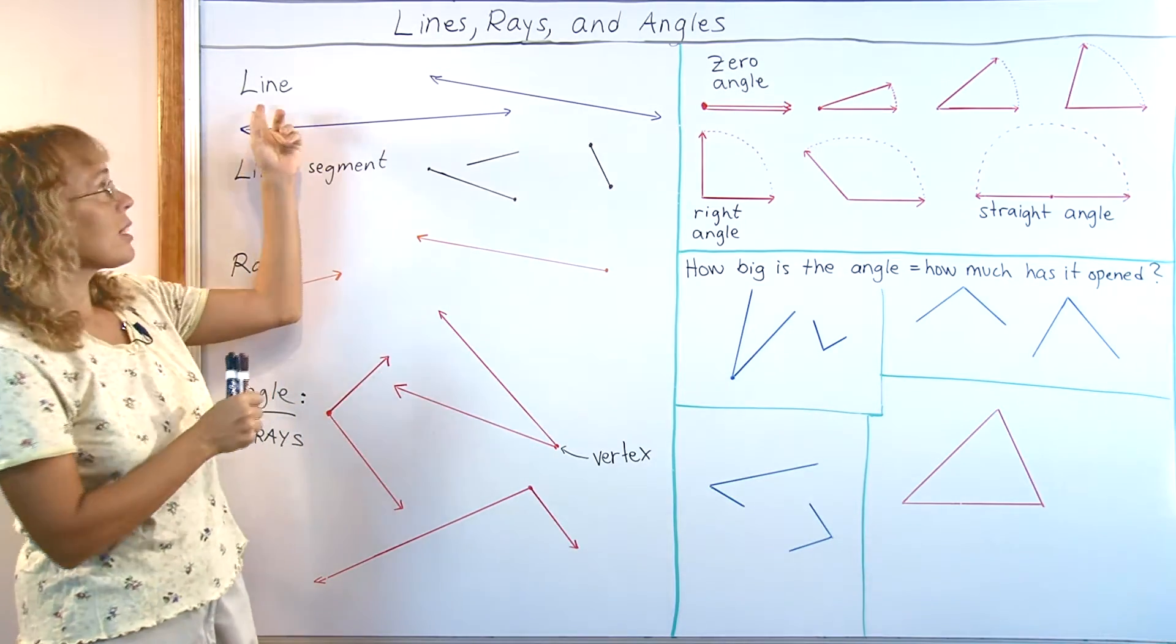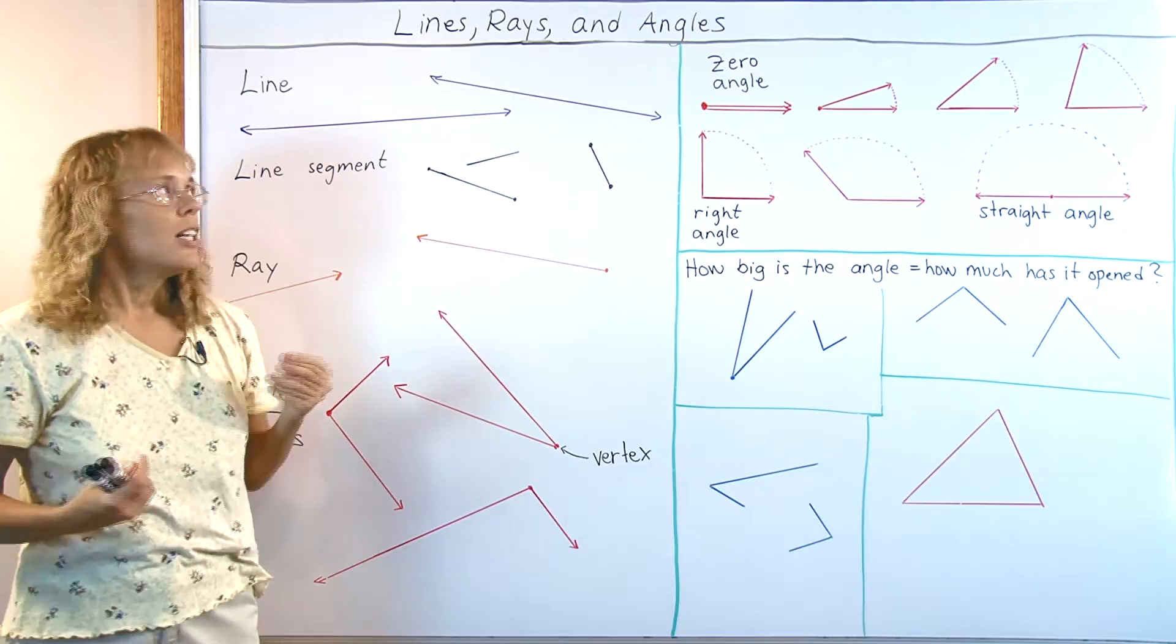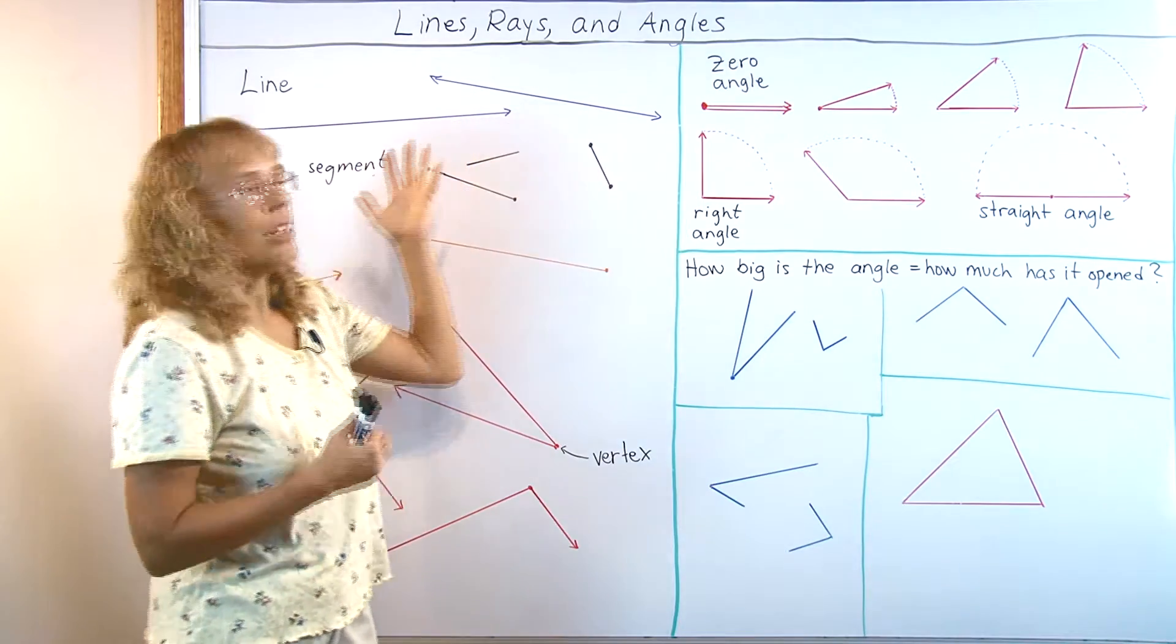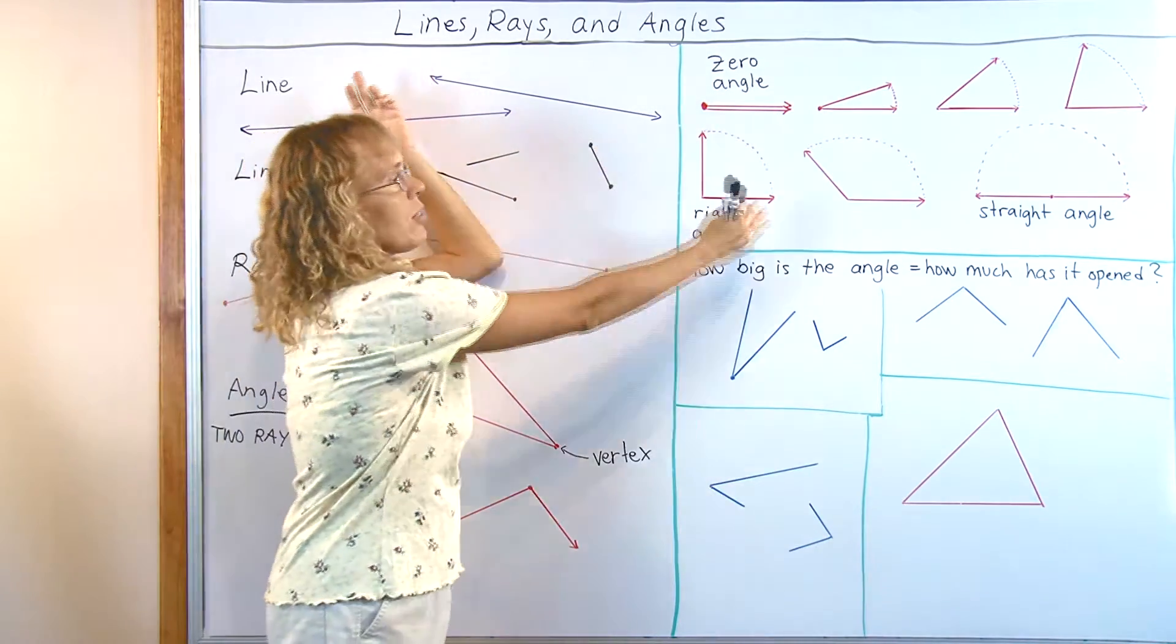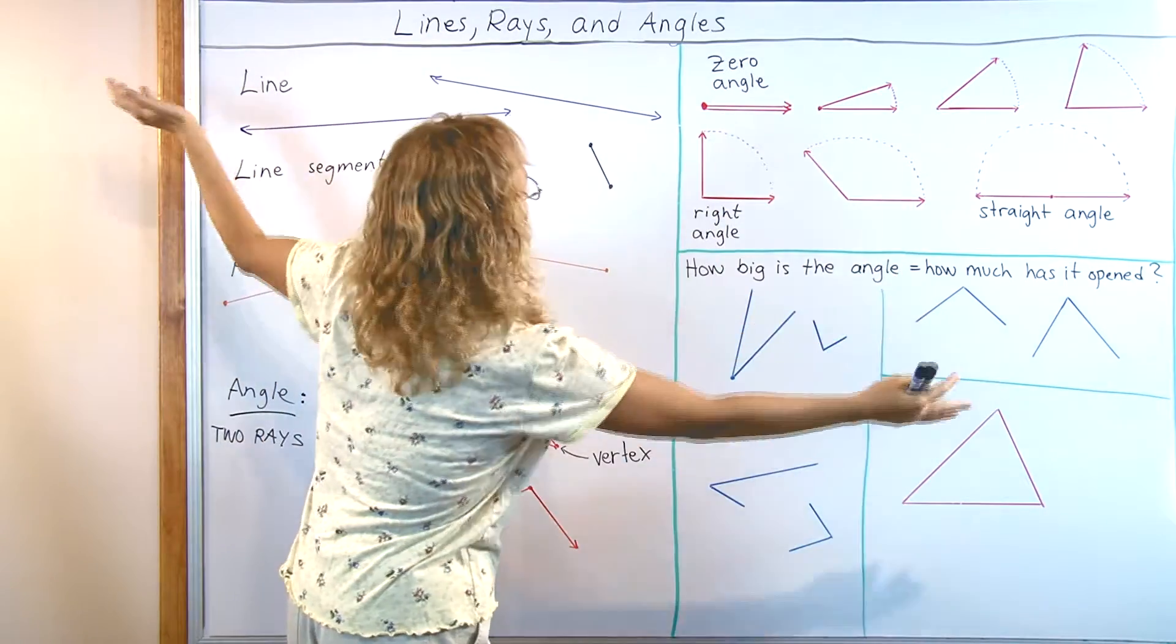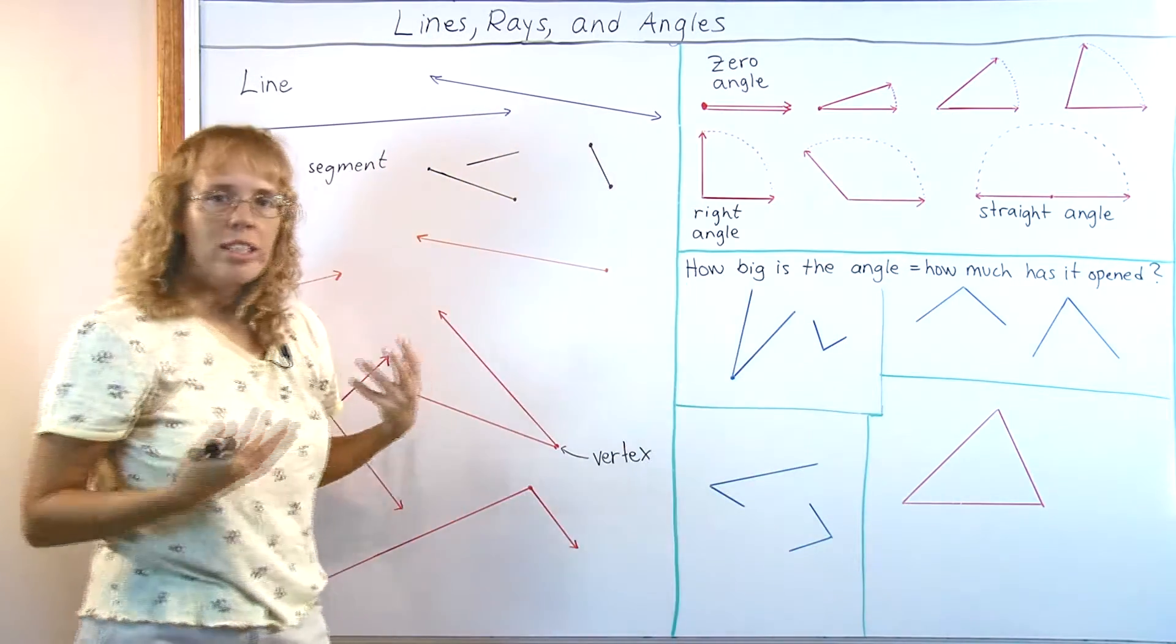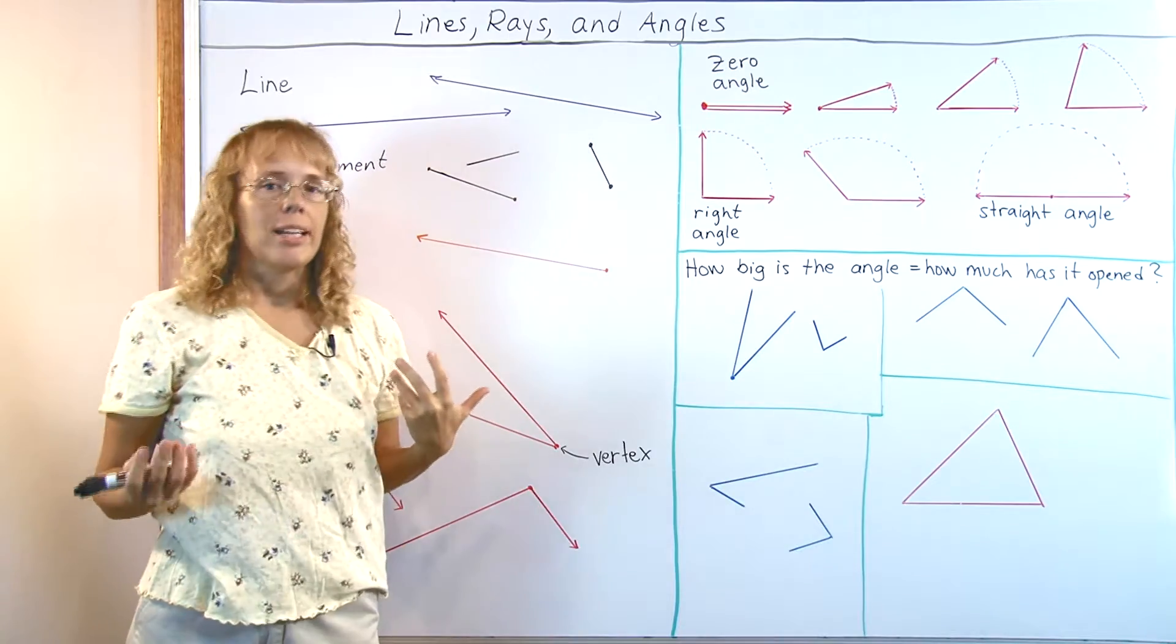But let's start, what is a line? In geometry, a line is like you see a line, but it continues in both directions until infinity basically. There is no end point, no starting point for a line.